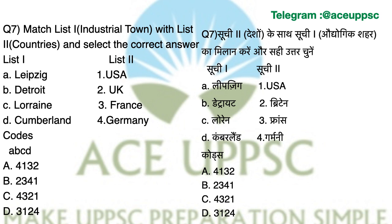Question number 7. Match list 1 with list 2. List 1 has some industrial towns and list 2 has some countries. The answer is A: 4, 1, 3, 2. Leipzig is in Germany, Detroit is in the USA, Lorraine is in France, and Cumberland is in Germany.